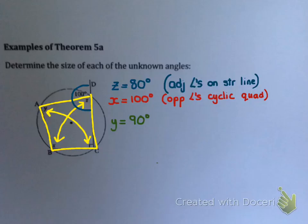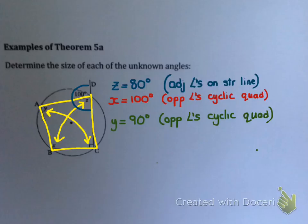Y is pretty easy because Y is opposite to 90 degrees, so Y must also be 90 — for the exact same reason: opposite angles of a cyclic quad. So there's an example of Theorem 5A.